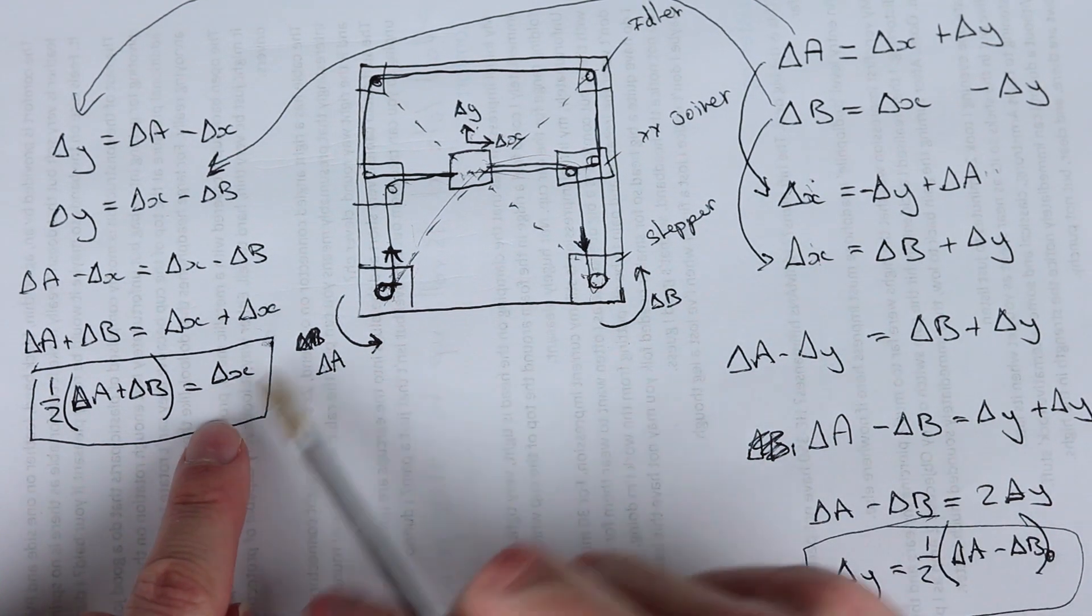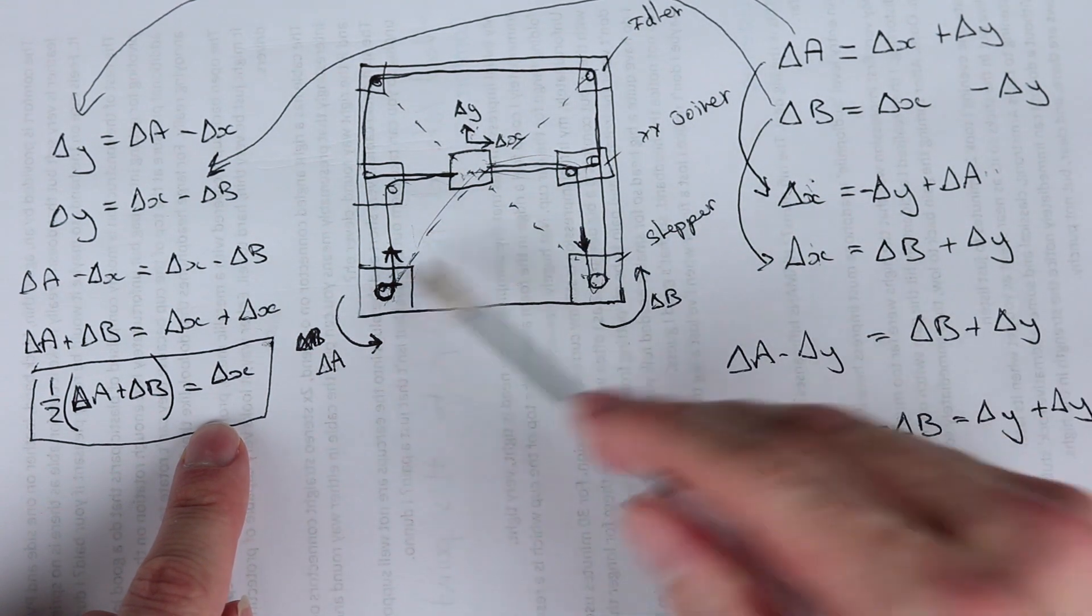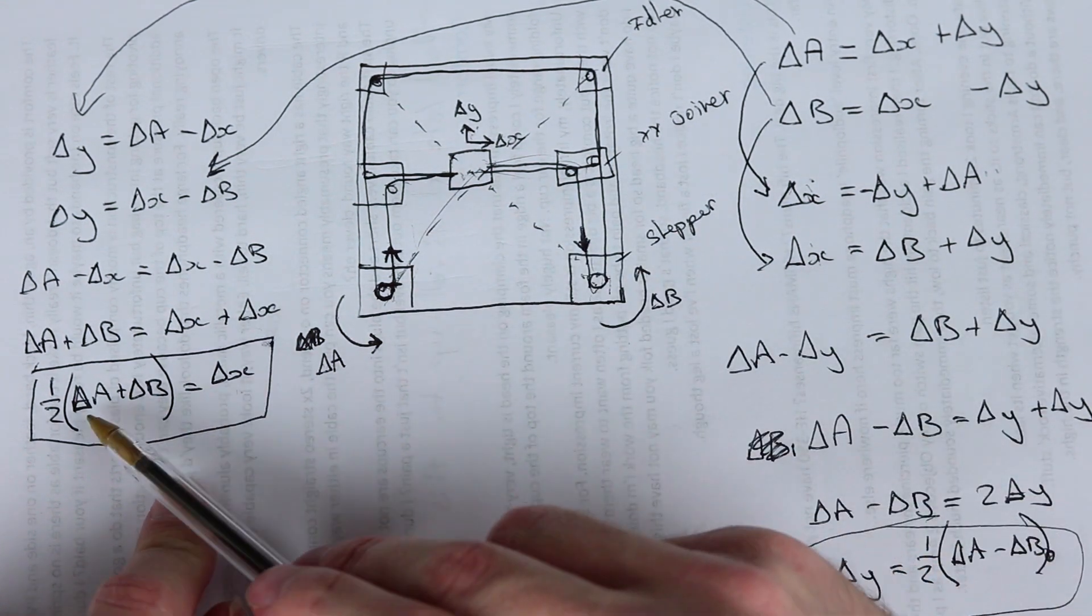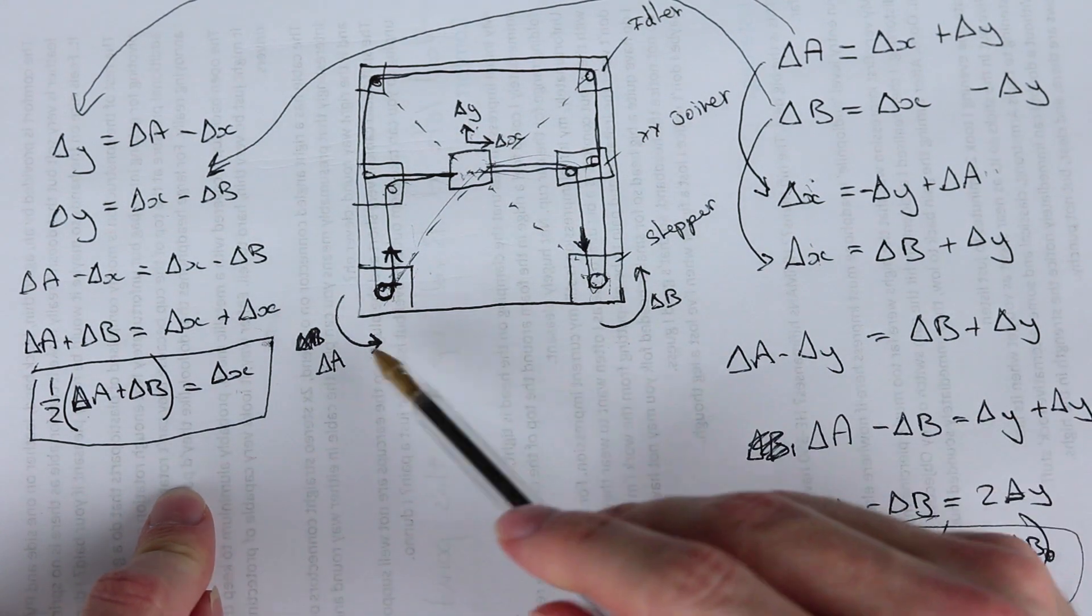So if we want a change in X, so just in that direction, we can't do it with a single stepper motor. Delta X must be done with a combination of A and B. So hopefully I've explained a little bit more about how core XY works and what it actually is.